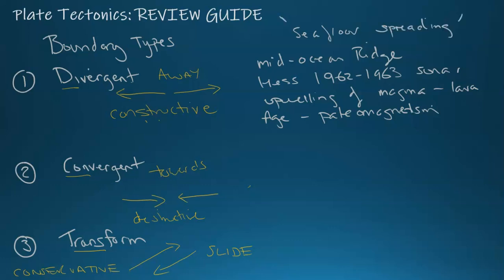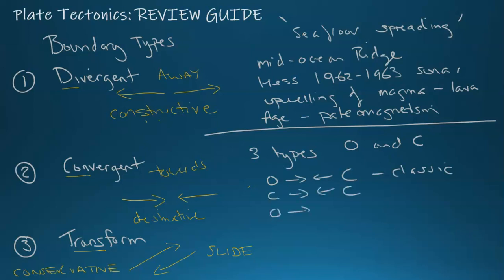Convergent, now it comes in three types. Three types based on the two plate, the two crust differences. So we have the ocean plate and the continental plate. So we have ocean that collides with continental. That's the classic. You have continental smashing against continental. You have ocean smashing against ocean. So these three variations all have different features.